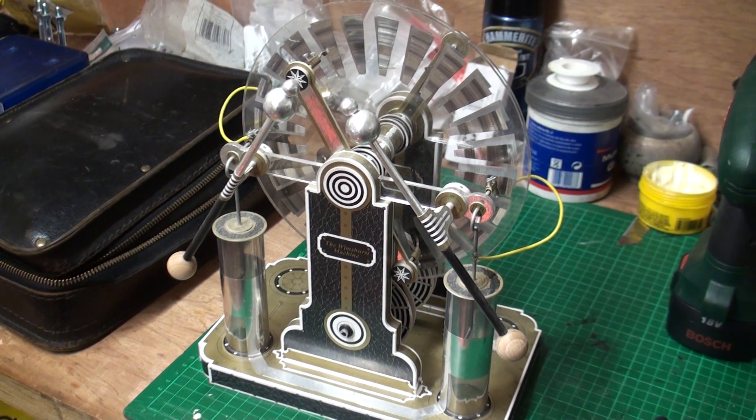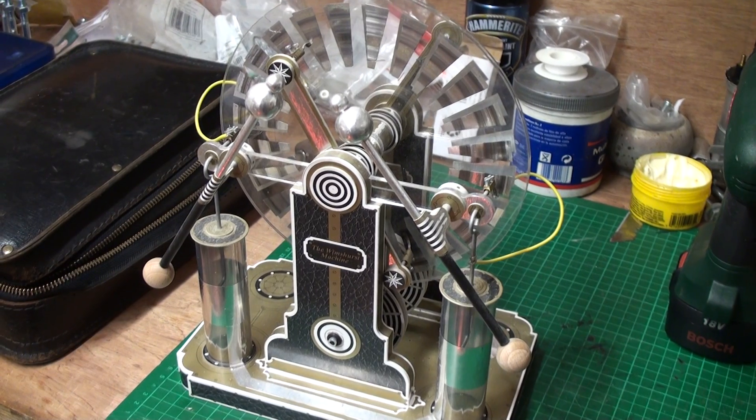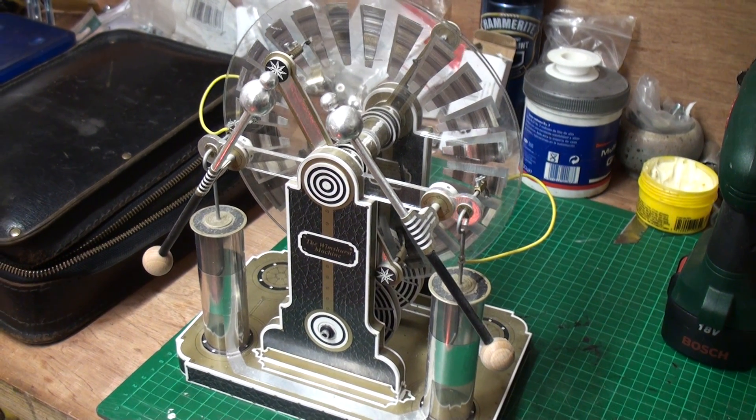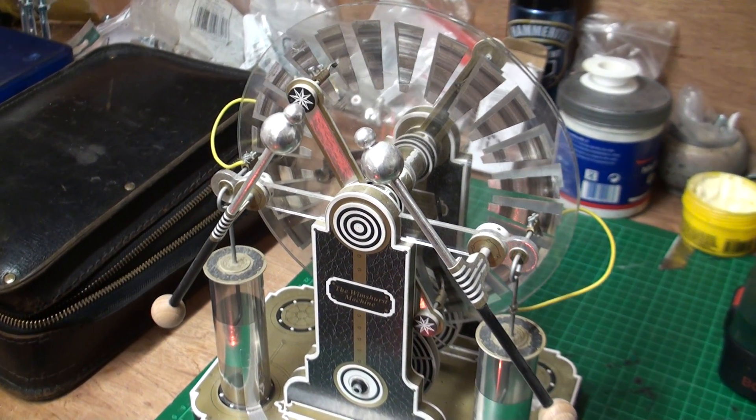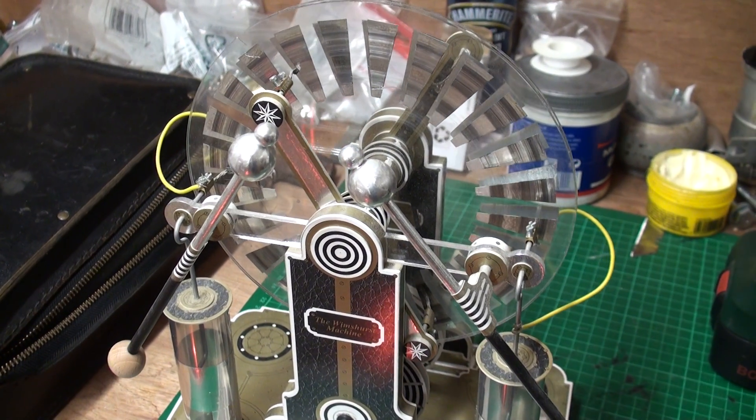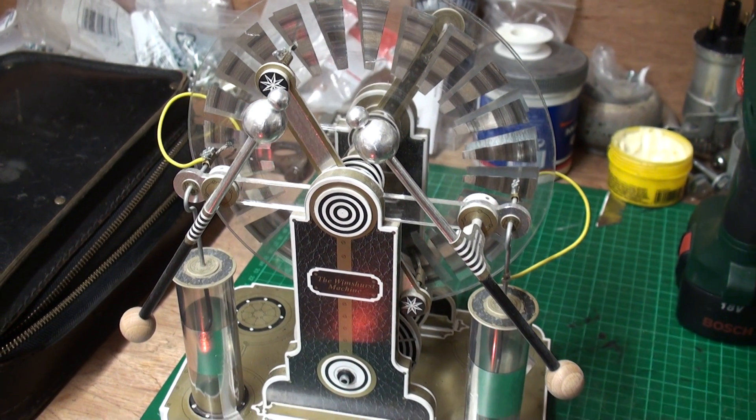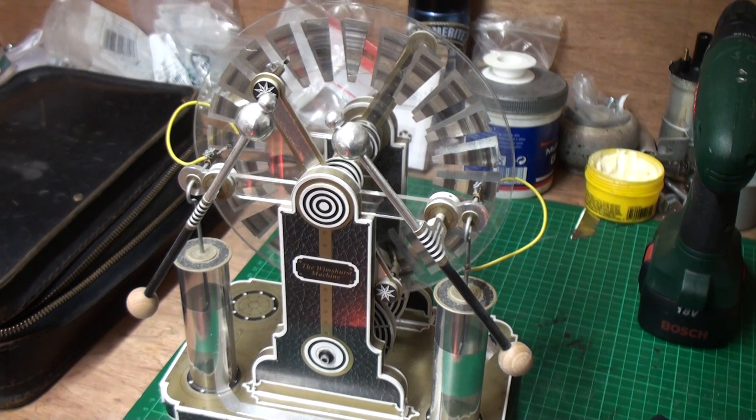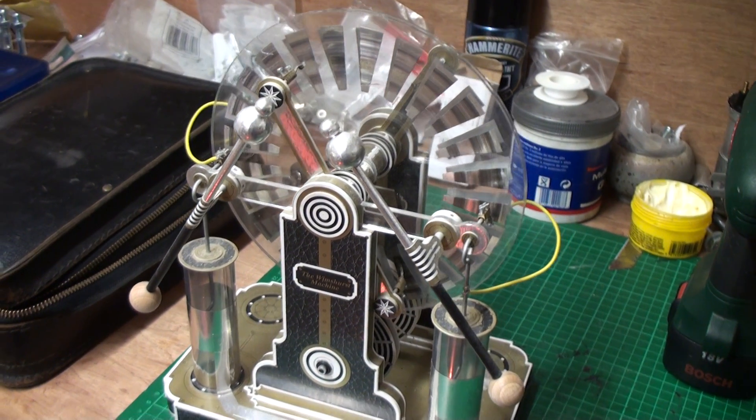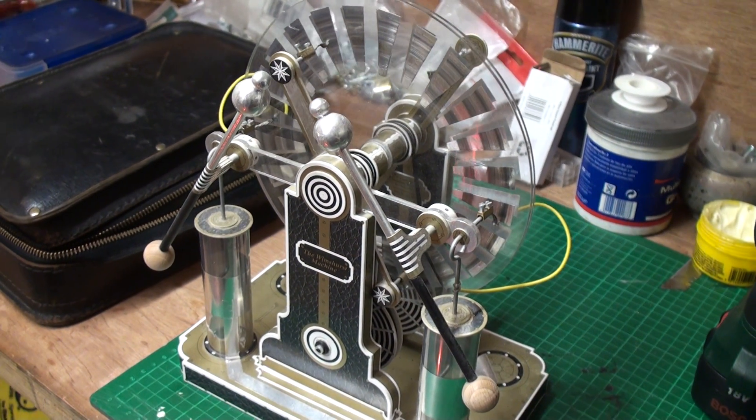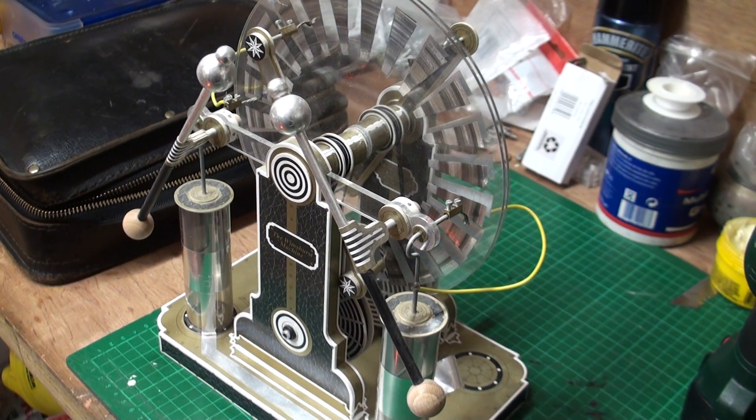When we think of a Wimshurst machine, it's an electrostatic generator, an old-fashioned machine. If you were to go out and buy one, very likely you'd buy something like this, almost sort of toy size, but they do work extremely well. In that case, the ball gap there is about 30mm. A spark would jump across there from that little machine.